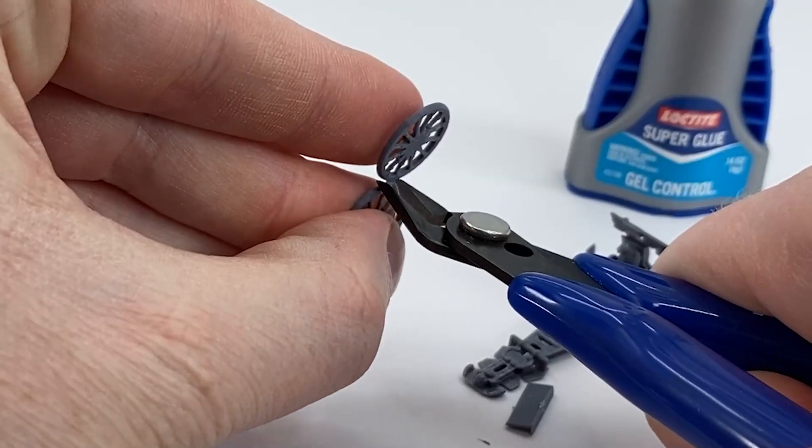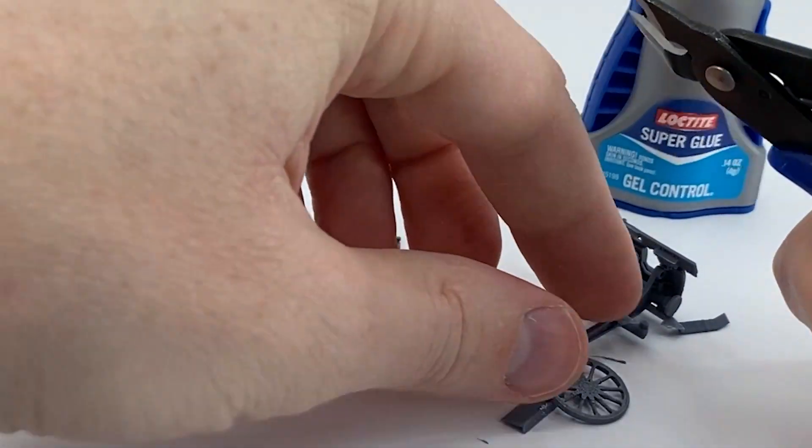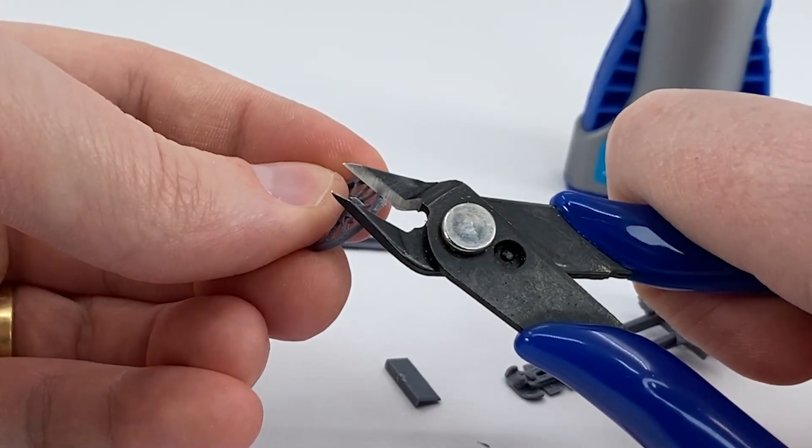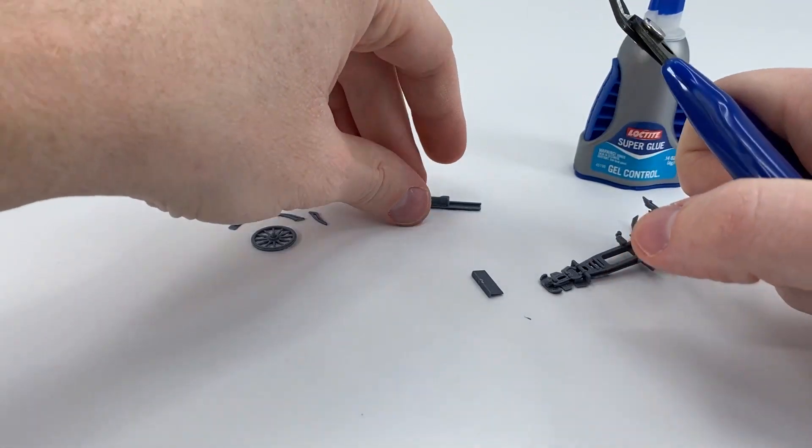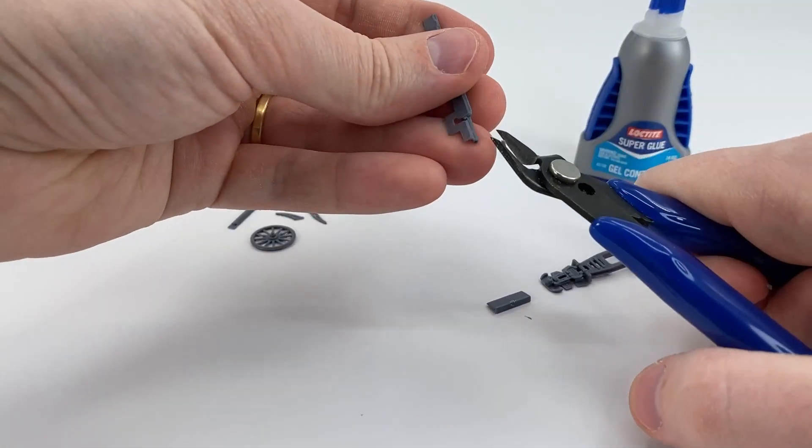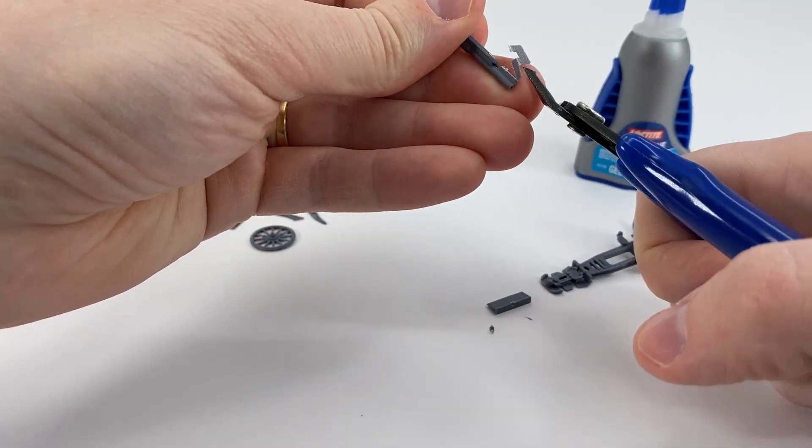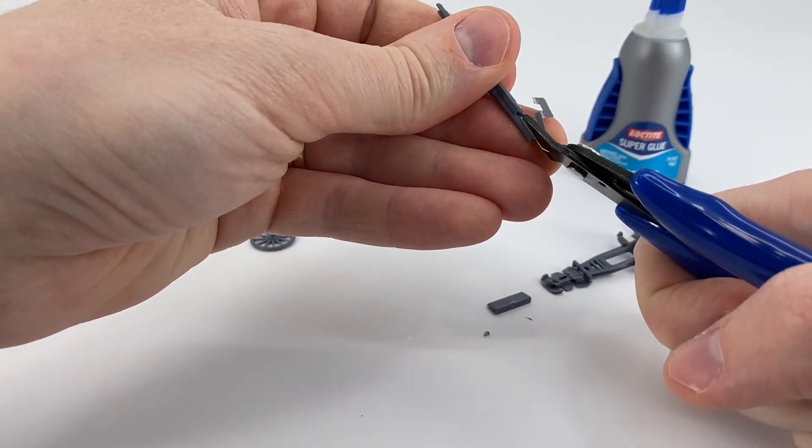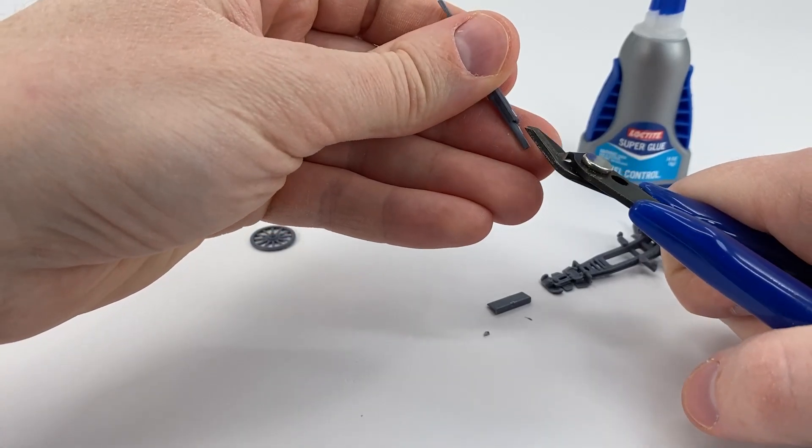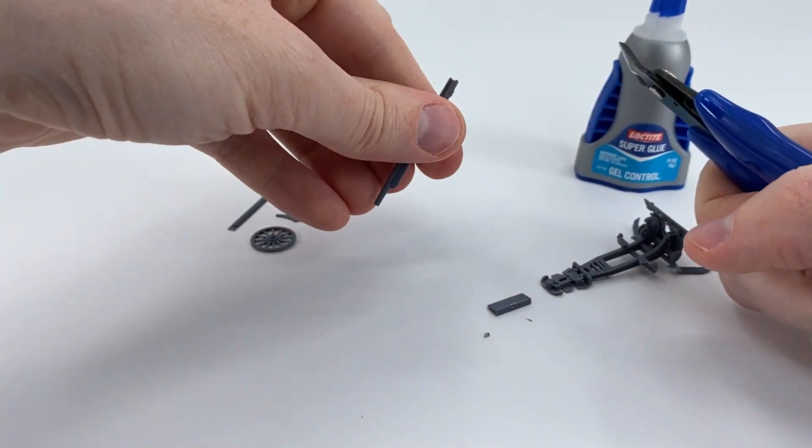And of course, cutting these screws off the wheels. There you go. And then another thing that you want to do is take and cut this plastic support off the gun, under the gun there.